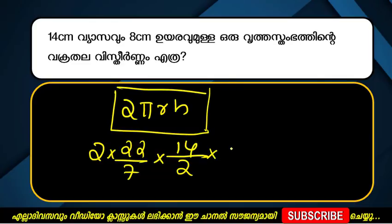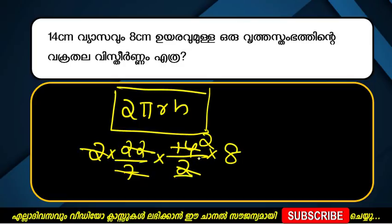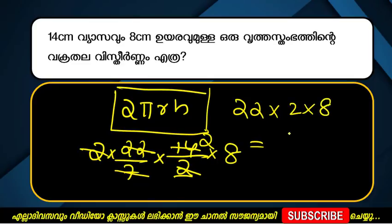8. We'll solve it. How do we solve it? 4, 14, 2. Now we'll solve it. 2, 11, 1. Here we'll solve it. 22 into 2 into 8. How do we solve it? 44, 44 into 8.